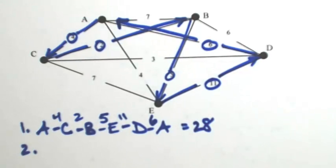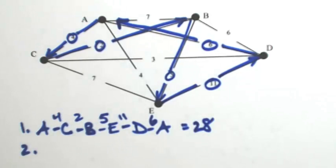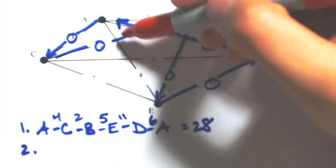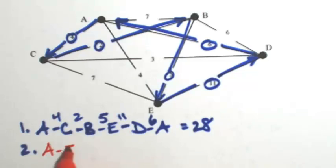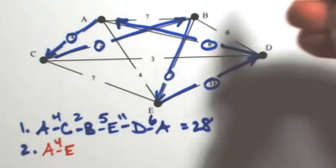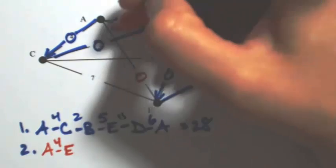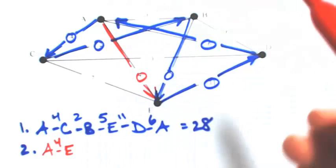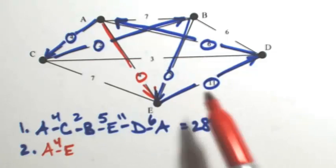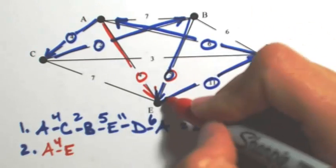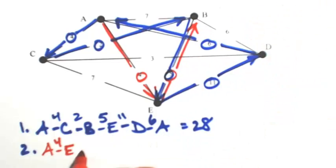There's a second possibility. Instead of going from A to C using the edge of 4, we go from A to E using the other edge of 4. From E, the options are 7, 5, or 11, so 5 is cheaper. That takes us to B.